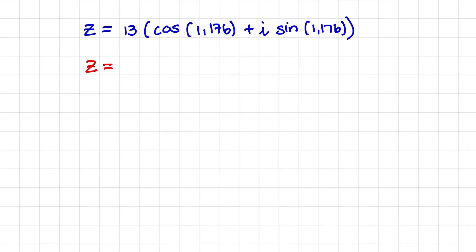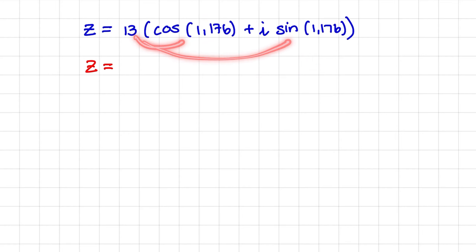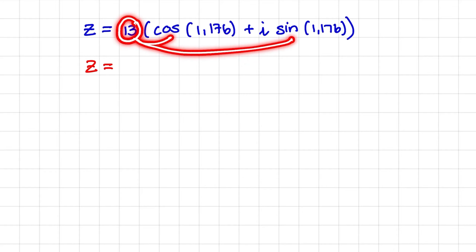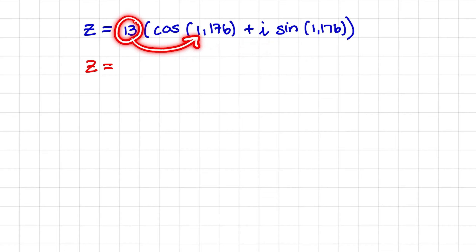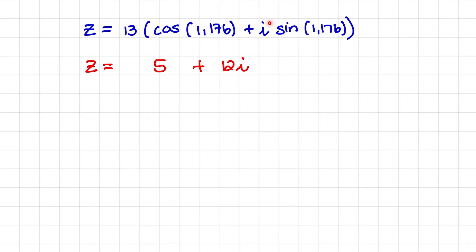What you need to do is use your calculator and remember to set your calculator to radians and not degrees. That will help you to simplify this expression. So what we're going to do is multiply both terms in the bracket by the modulus of 13 on the outside. So 13 times cos of 1.176 equals 5, plus 13 times sine of 1.176 equals 12i. Notice that I do not multiply with i because i is an imaginary number. And that is how we rewrite a complex number in modulus argument form in its standard format.